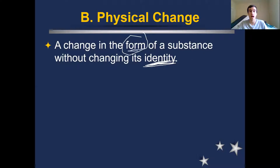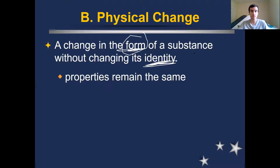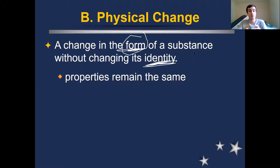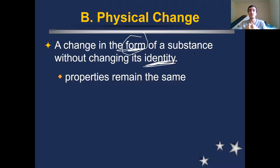With a physical change, we're changing how it looks but we're not turning it into something new. All the properties of that thing remain the same. If you took a big iron bar and cut it up into a whole bunch of little pieces, all those pieces would still be made out of iron. They would all still be magnetic, still be heavy and dense and probably rough on top. Those are all physical properties and they all stay the same — it's just now a little bit smaller than it was before.